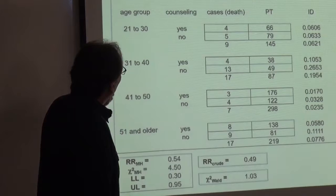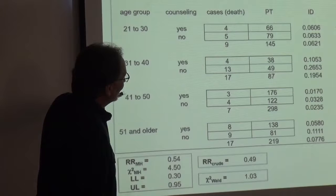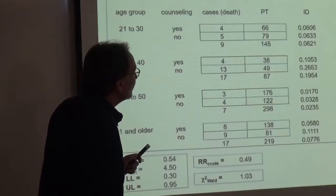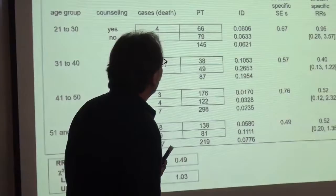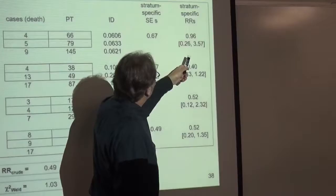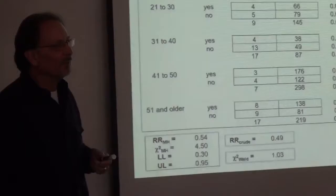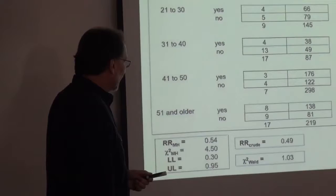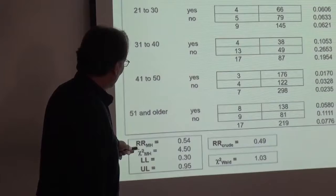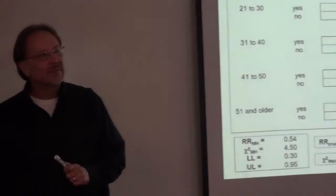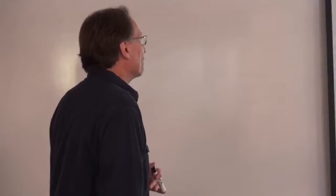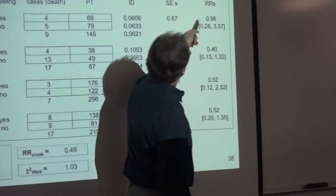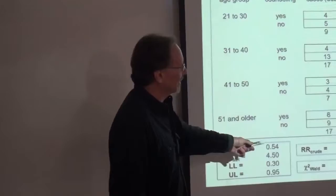It looks like there might not be an association for the younger people. As we get older, it still looks like no association, no association, no association in any of these strata. So probably we don't have too much of an effect, because it's not significantly elevated. Although there might be some hint that older people, say 30 and over, might experience more benefit. We have a Mantel-Haenszel and a crude statistic that look very similar, and when you adjust for age group, all of a sudden we have a significant protective effect adjusted for age group for counseling.